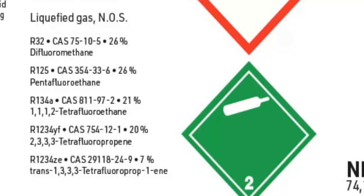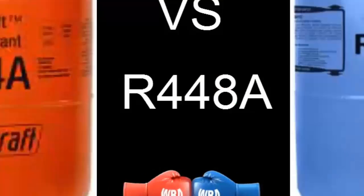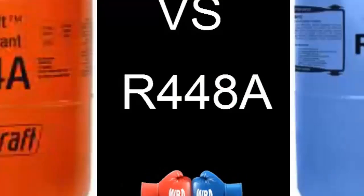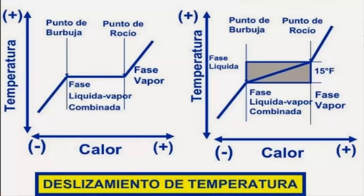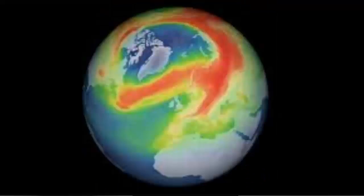The glide of R404A is very low and lower than that of R448A. Remember, glide is the temperature change of the gas during phase transition. Neither R404A nor R448A damage the ozone layer.